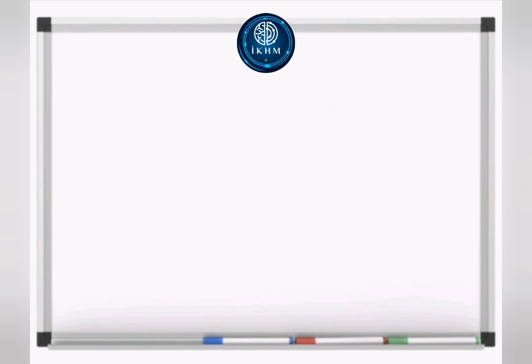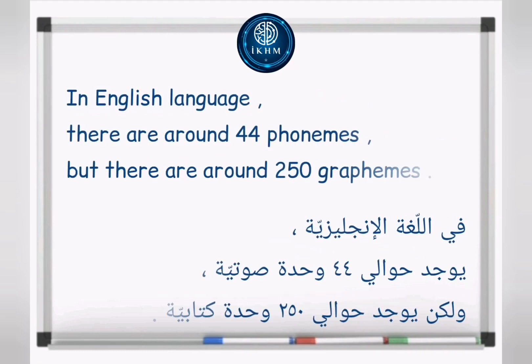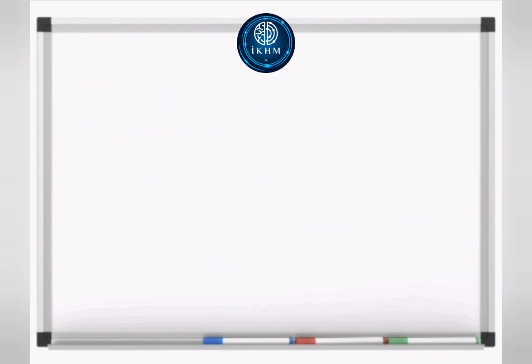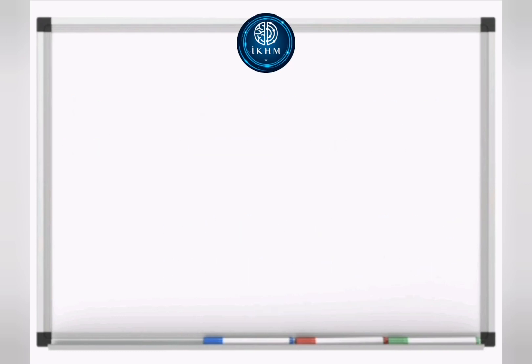A grapheme or phoneme can be made up of one letter or a group of letters. In the English language, there are around 44 phonemes but around 250 graphemes. Phonemes are divided into two categories: vowel sounds and consonant sounds.